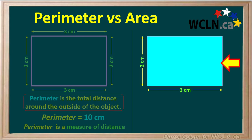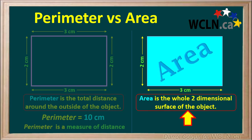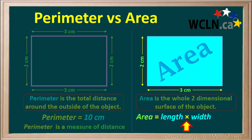Now we'll look at the rectangle on the right. It has a length of 3 cm and a width of 2 cm, just like the one on the left. For this rectangle, we'll consider its area. The area is the whole two-dimensional surface of the object, which we've colored in with light blue. We calculate the area using the formula: area equals length times width, which is 3 cm times 2 cm, or 6 cm squared, which can also be stated as 6 square centimeters.